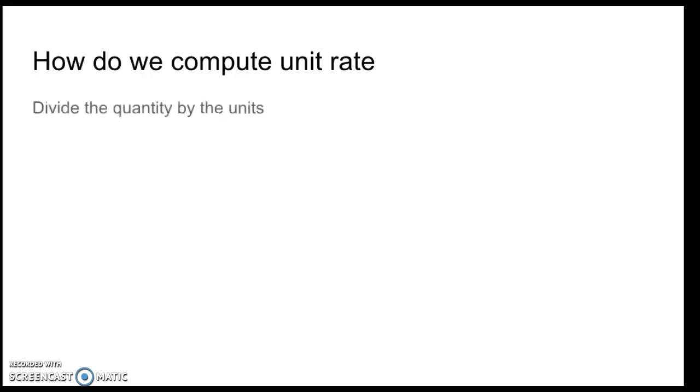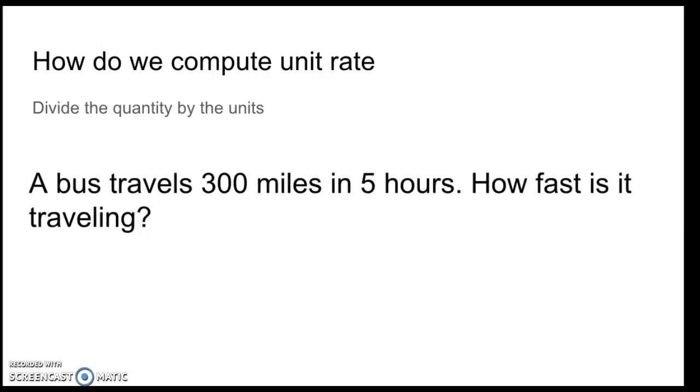So, how do we compute the unit rates for a ratio? It's pretty simple. You just find the quantity and divide by the number of units and that gives us the rate for one unit. So, for example, if a bus travels 300 miles in five hours, how fast is it traveling?